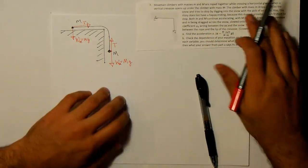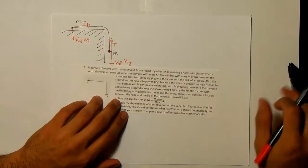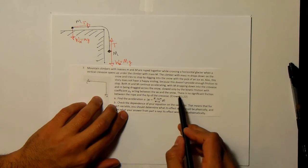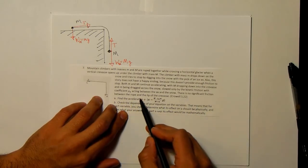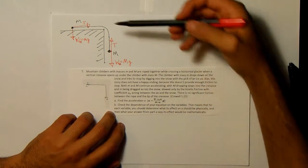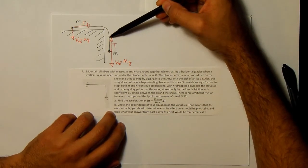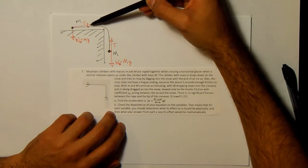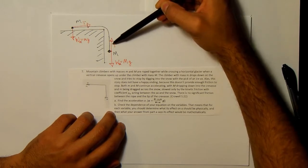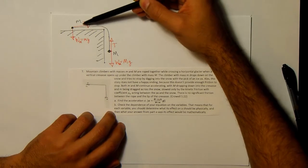So that's actually what comes from this part of the problem that says there is no significant friction between the rope and the lip of the crevasse. So that translates to saying, well, there's no friction right here and so the tension that this rope is experiencing is going to be the same all throughout the rope. So that the tension, the number that we have over here is going to be the same as the number that we have over here.